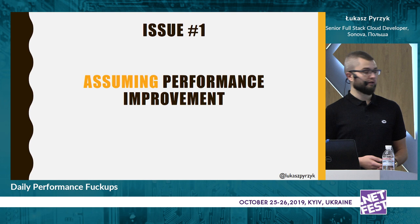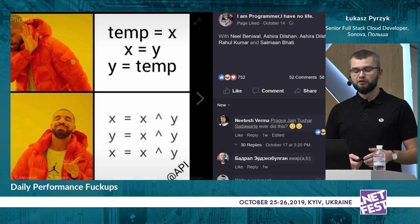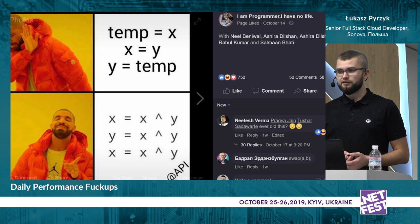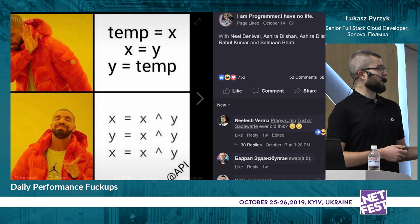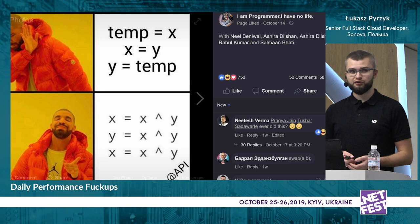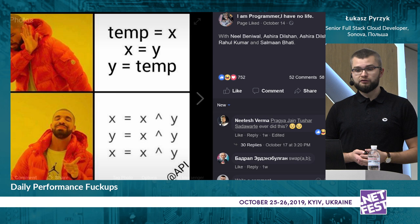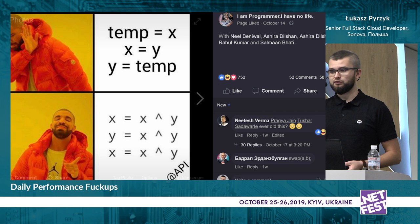Let's start with assuming performance improvements. I was wondering how to open the conference, and I was scrolling Facebook. I found a fan page called 'I am programmer, I have no life.' They posted a picture where rapper Drake says that swapping two variables with a temp variable is not senior enough. Drake is very proud of swapping variables using three XOR operations, because it looks cool and makes you senior. More than 700 people liked this post, so maybe they moved to this solution. Let's try to make a few assumptions.